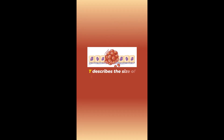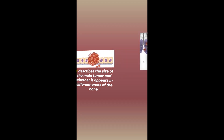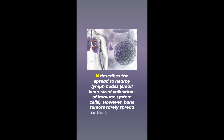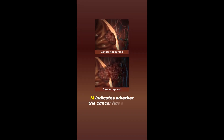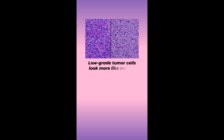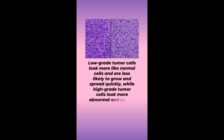T describes the size of the main tumor and whether it appears in different areas of the bone. N describes the spread to nearby lymph nodes — lymph nodes are small bean-sized collections of immune system cells — however, bone tumors rarely spread to lymph nodes. M indicates whether the cancer has spread to other organs of the body. G stands for the grade of the tumor, or how the cancer cells look in lab tests. Low-grade tumor cells look more like normal cells and are less likely to grow and spread quickly, while high-grade tumor cells look more abnormal and spread more quickly.